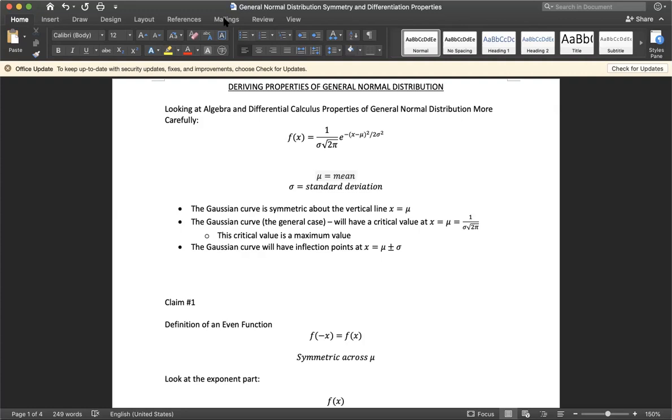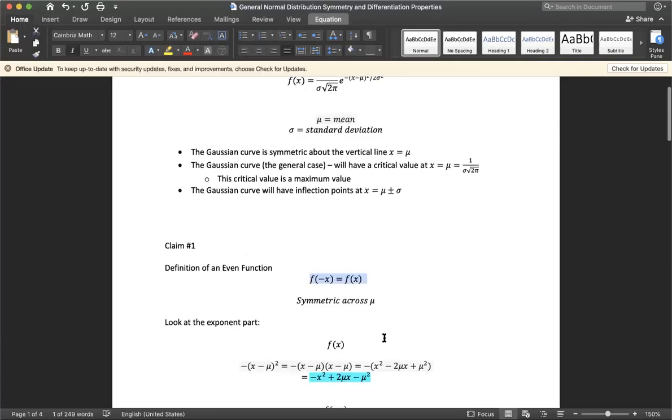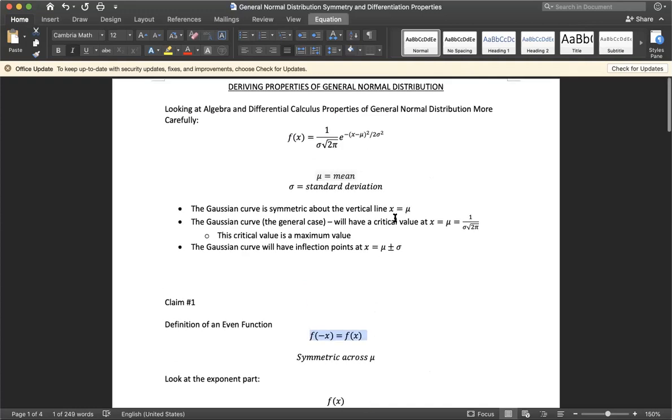In order to prove that the normal distribution curve is symmetric about the mean, we need to show that it fits the definition of an even function, which is given by this statement. For a function to be even means that if we put in a negative input or a positive input, they will give us the exact same output. Nothing changes with the sign, so it will be symmetric across mu.